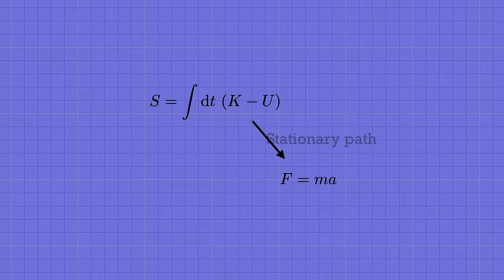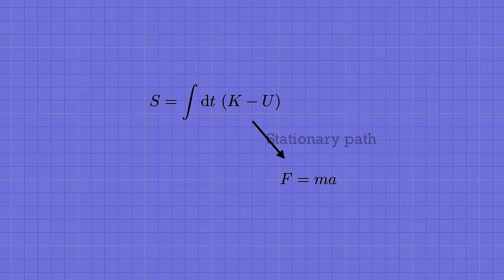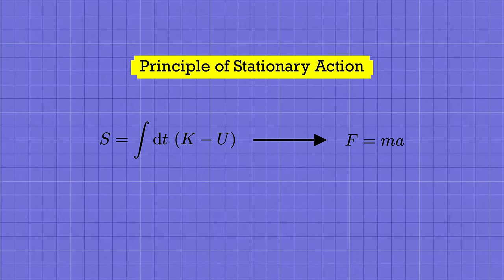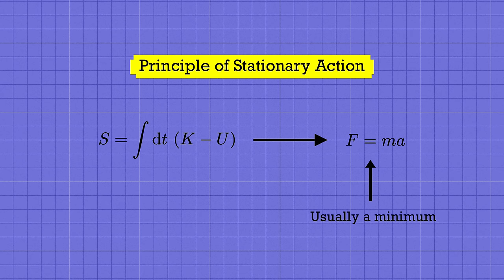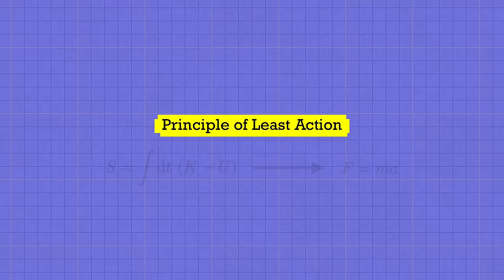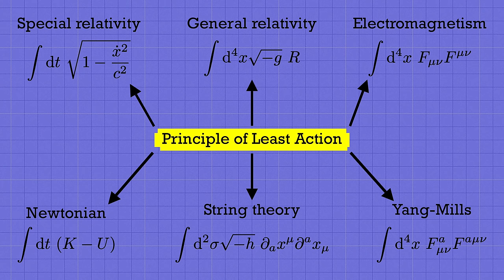The fact that the trajectory of a classical particle makes the action stationary is called the principle of stationary action. Actually, more often than not, the classical trajectory comes out to be a minimum of the action. And so it's more common to call this the principle of least action. It's one of the most fundamental principles in classical physics, much more fundamental than f equals ma. And now we've seen how it emerges from quantum mechanics.